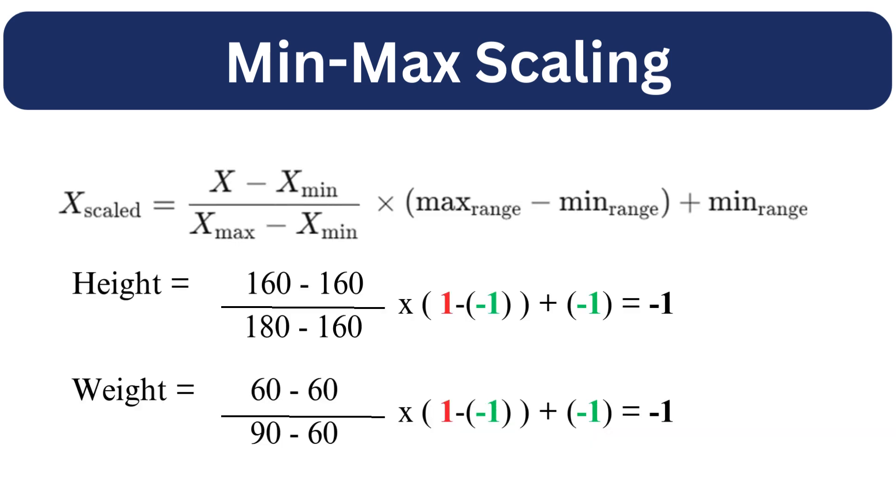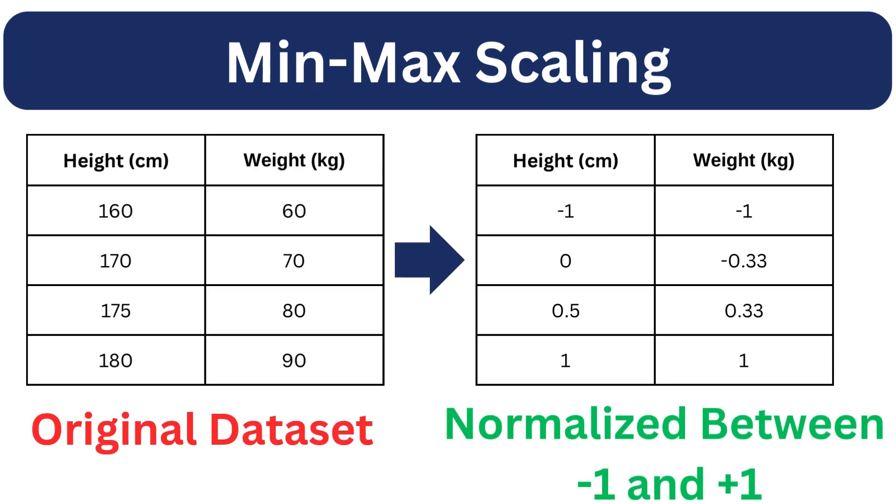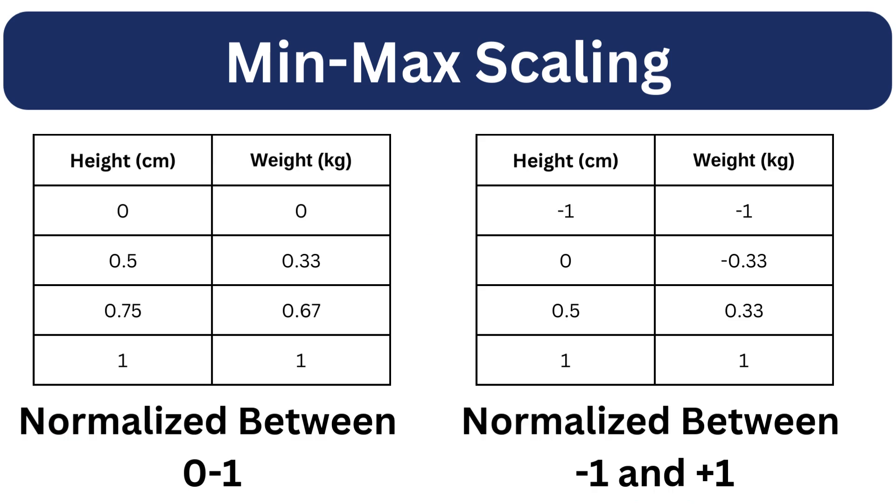We can also normalize it using any provided range, for example, negative 1 to positive 1. After normalization, both height and weight will be on a common scale, allowing them to contribute equally to distance calculations in machine learning algorithms.